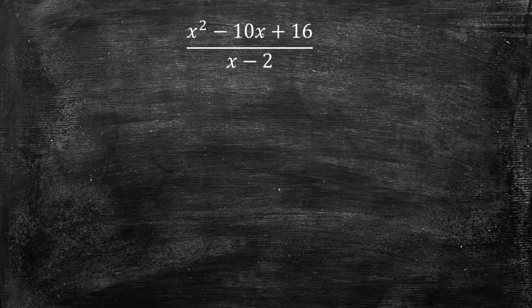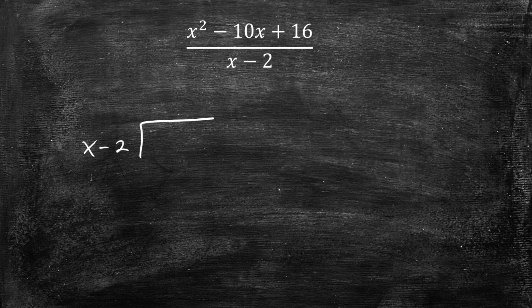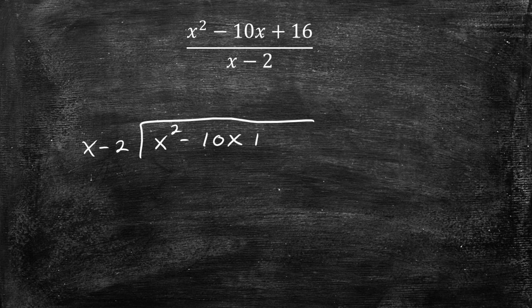Example number 2. We have a trinomial being divided by a binomial. So the way we set this up is that we're going to put x minus 2 on the outside and on the inside is going to go x squared minus 10x plus 16. And what you want to make sure that you do is write the powers descending, so the x squared, then the x, then no x's, so that way it makes it easier.